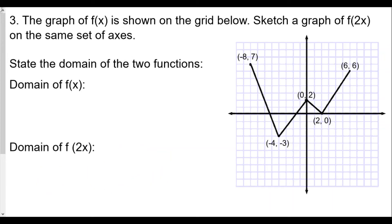Question three: the graph of f of x is shown in the grid below — sketch the graph of f of 2x on the same axes. Since it's f of 2x, we're going to multiply each x value by one half, so x comma y becomes one-half x comma y.